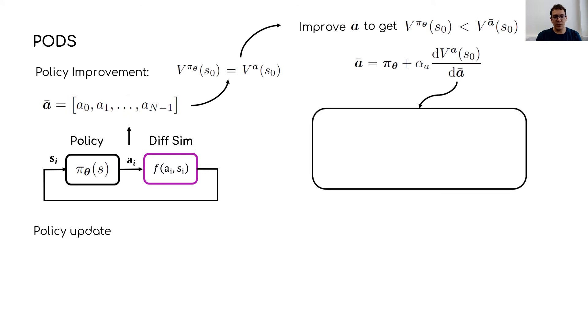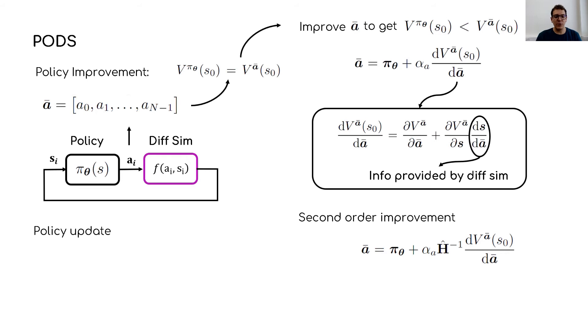Note that in order to compute such gradient, the only piece of information that we require from the differentiable simulator is the Jacobian ds/dā. Moreover, without requiring any additional information from the simulator, it is also possible to efficiently compute a second-order improvement, as detailed in the paper.